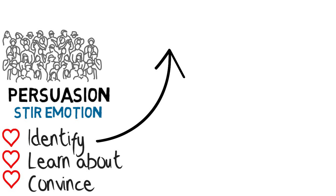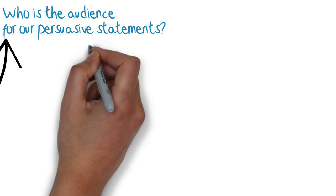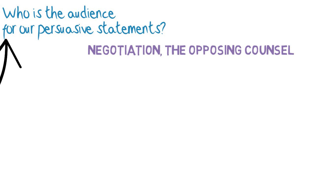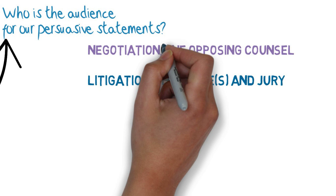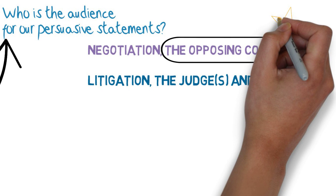First, let's identify the audience. Who is the audience for your persuasive statements? If you're engaged in a negotiation, then the immediate audience is the opposing counsel. In litigation, the immediate audience is clear — the judge or judges — and if it's a trial, the jury. But don't forget that opposing counsel is also part of your audience.